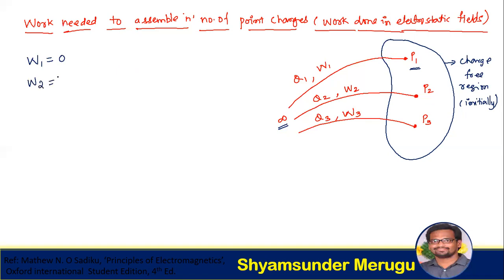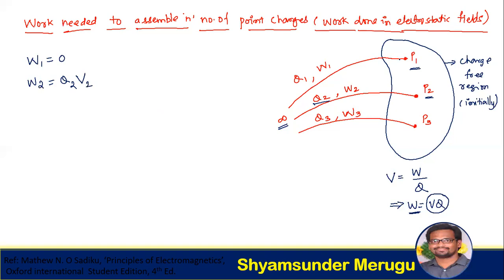Now we write the expression for W2 — the work necessary to move charge Q2 from infinity to point P2. Since electric potential V = W/Q, the work done is W = V·Q. So W2 equals Q2 multiplied by the potential at point 2 due to charge Q1, which we write as V21.